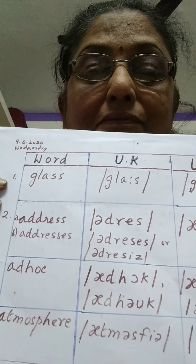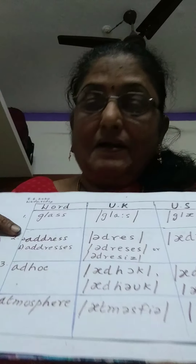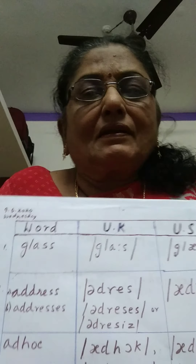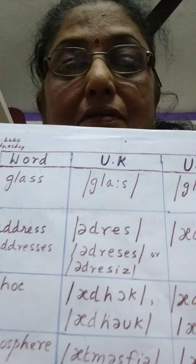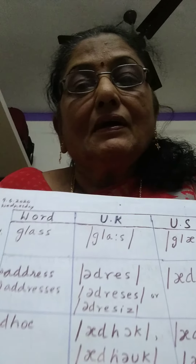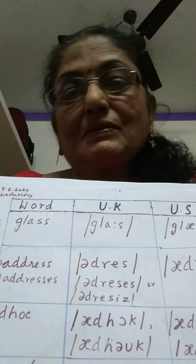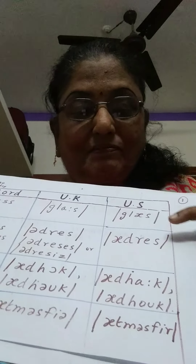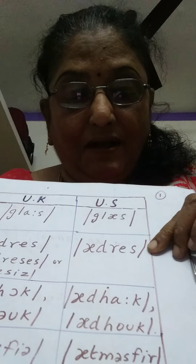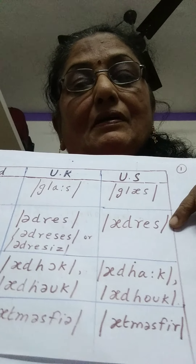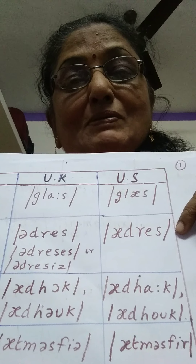The next word is 'address.' We should not just stress it as 'address' — it's 'address.' When you use it in plural or as a verb, you say 'addresses.' The British pronunciation is 'address,' whereas the American pronunciation is 'address,' with stress on the first syllable.